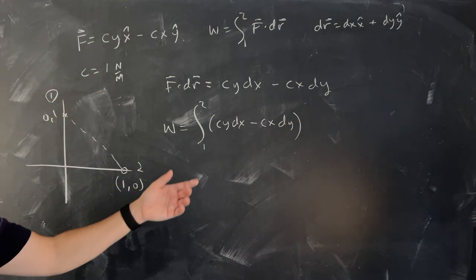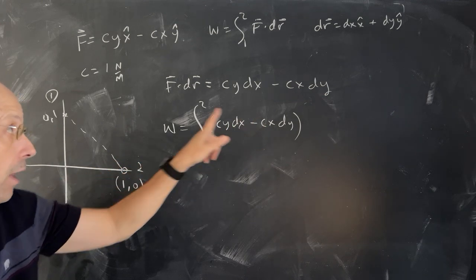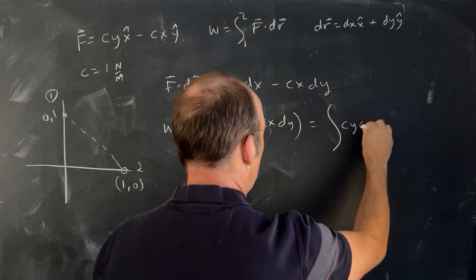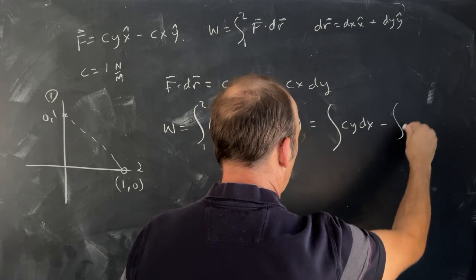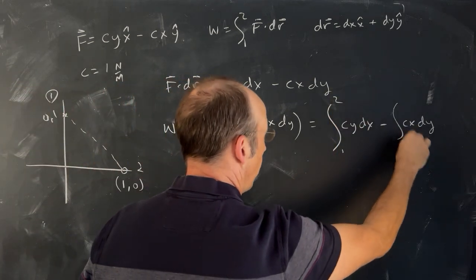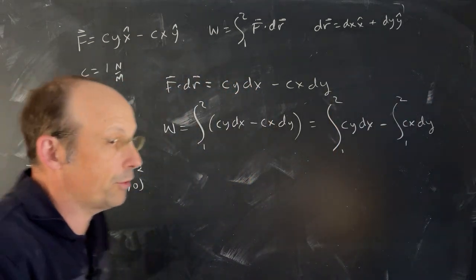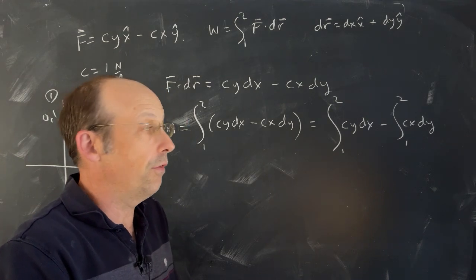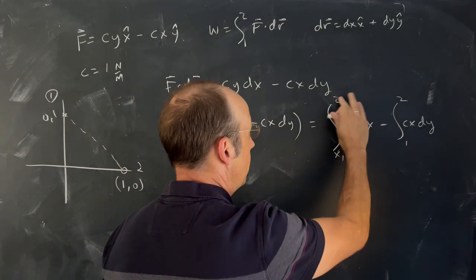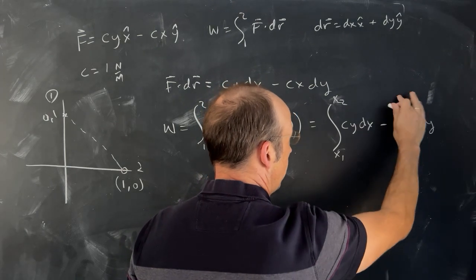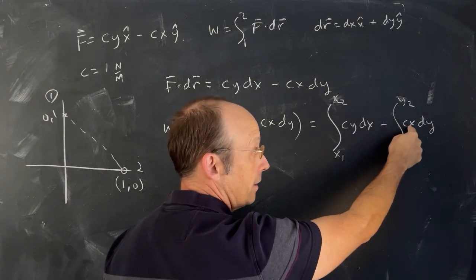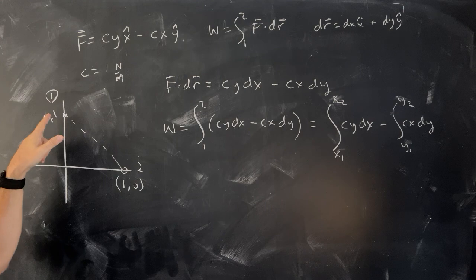There's clearly a problem here - I have Y in the dx integral and X in the dy integral, and I don't even know the limits of integration. Let's break this into two integrals: the integral of CY dx minus the integral of CX dy, going from x1 to x2 and y1 to y2. But I still have Y in the first integral and X in the second - I can't integrate. So I need to get a relationship between X and Y from the path.